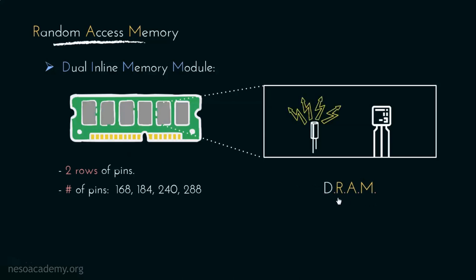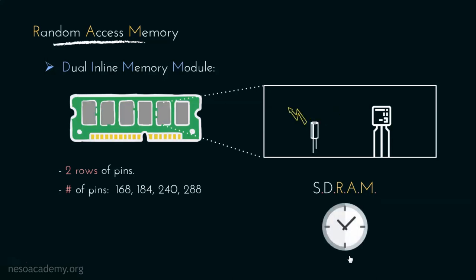DRAMs are actually asynchronous, and that is why they were discontinued when the next type of RAMs emerged. These are called SDRAMs, where S stands for Synchronous. These run synchronously with the system clock, and that is why they are way faster than basic DRAMs.